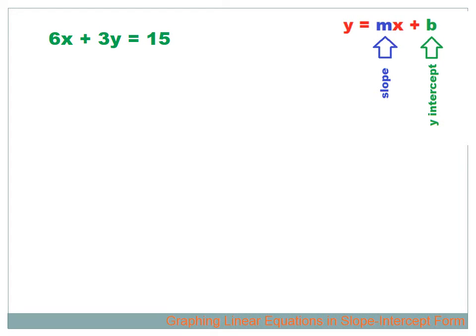That's pretty cool — we took an equation in slope-intercept form, used the slope and intercept to create the line. But what if they gave us an equation that wasn't in slope-intercept form? I've got to have y isolated on the left, the x variable on the right with a coefficient representing the slope, and an intercept. There is a solution to this problem.